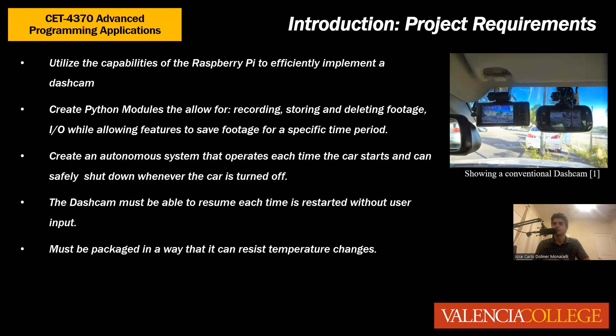The project requirements are to utilize the Raspberry Pi 3 to create a dashcam system, and to successfully create Python modules for a dashcam — that being a recording module, a storage management module, and modules for managing I/O devices and permitting recordings. The system must be autonomous: each time the car is powered up, the Raspberry Pi can be powered up and start recording after a certain amount of time.